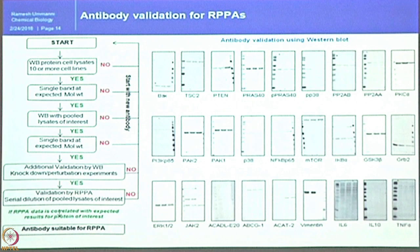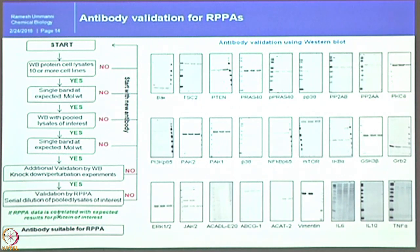Antibody validation is laborious — we used to run hundreds to thousands of western blots for this purpose. Some antibodies give nicely clean single bands, while others show non-specific bands, and some are completely unusable. From personal experience, good results came from Cell Signaling antibodies, whereas Santa Cruz antibodies were less reliable. If an antibody gives a single band, it proceeds through the validation pipeline. Those with multiple bands are dropped immediately, and another antibody is purchased instead.